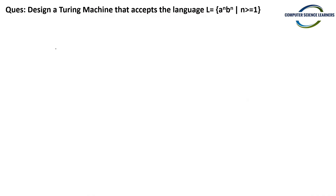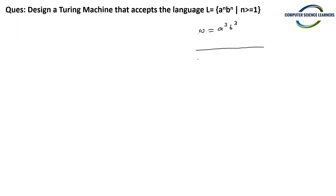Welcome everyone. Let us start with the designing of a Turing machine. The question is: design a Turing machine that accepts the language aⁿbⁿ. In Turing machine design, we always try to start with an example. Let us take some string — suppose a³b³. This is a valid string. Now let us see how the Turing machine processes it.